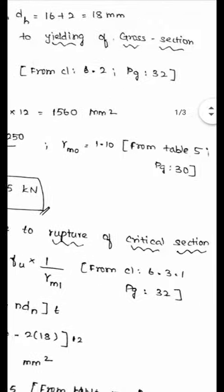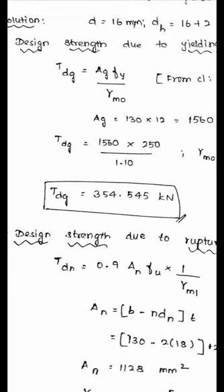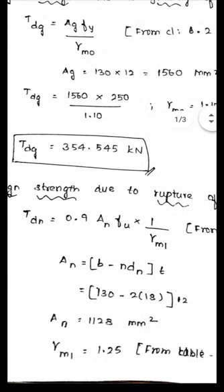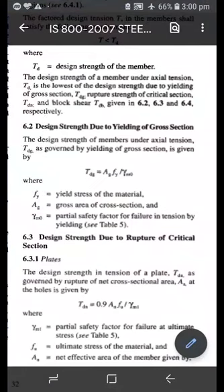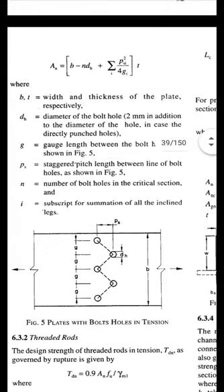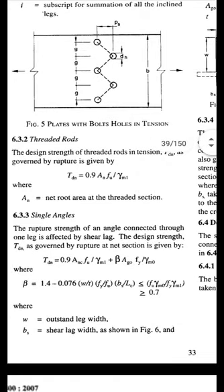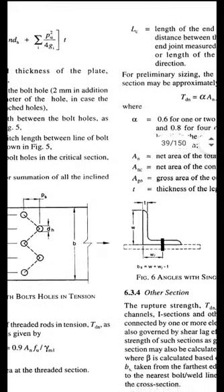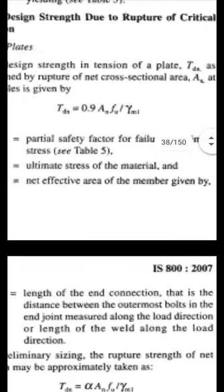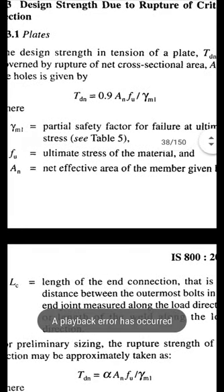Next, calculate the design strength due to rupture of the critical section. The code provides two different formulas. For a plate, use TDN = 0.9 × AN × Fu / γM1, from clause 6.3.1, page 32. For angles, a different formula is given. Since this is a plate, the formula TDN = 0.9 × AN × Fu / γM1 applies.